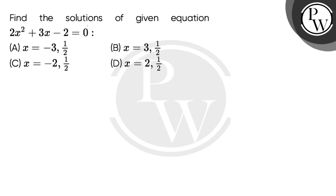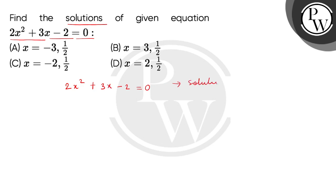Let's read the question: find the solutions of the given equation 2x square plus 3x minus 2 equal to 0. Given है हमें a quadratic equation 2x square plus 3x minus 2 equal to 0 और हमें find करने हैं इसके solutions. तो इसके solutions दो आ जाएंगे जिनको हम मान सकते हैं alpha and beta.